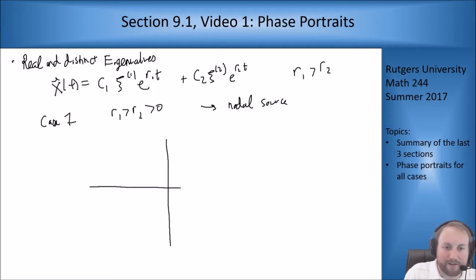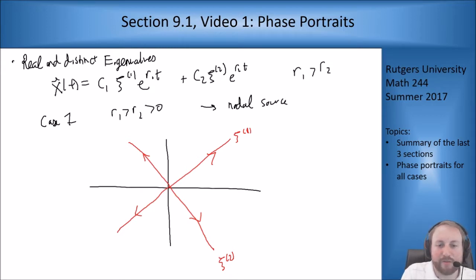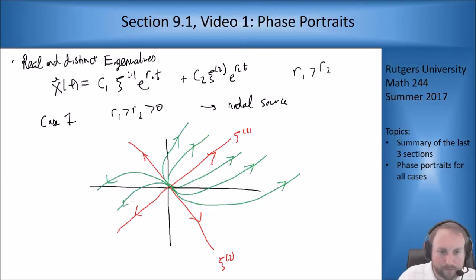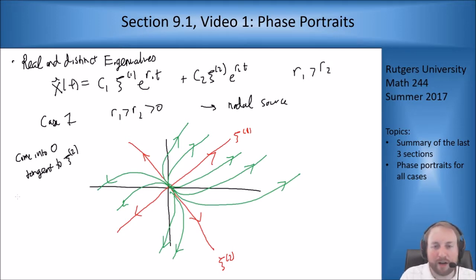What does this look like? If I have c1 going this way, c2 going this way, then everything is flowing away. I know that I come into the origin tangent to the r2 line as t goes to minus infinity and then I go parallel to the r1 line as t goes to plus infinity. So I get something that looks like this. You can see all these pictures in the book too. You're coming into zero tangent to the c2 line and you go to infinity parallel to c1.